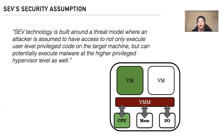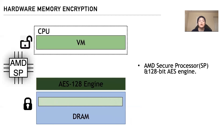Let's look at how SEV achieves this goal. The hardware memory encryption helps SEV-enabled VMs to automatically encrypt and decrypt their memory. In AMD's system-on-chip, besides the CPU, there is another processor called the Secure Processor, which manages some AES keys. There is also a 128-bit AES encryption engine, which handles encryption and decryption on the fly.